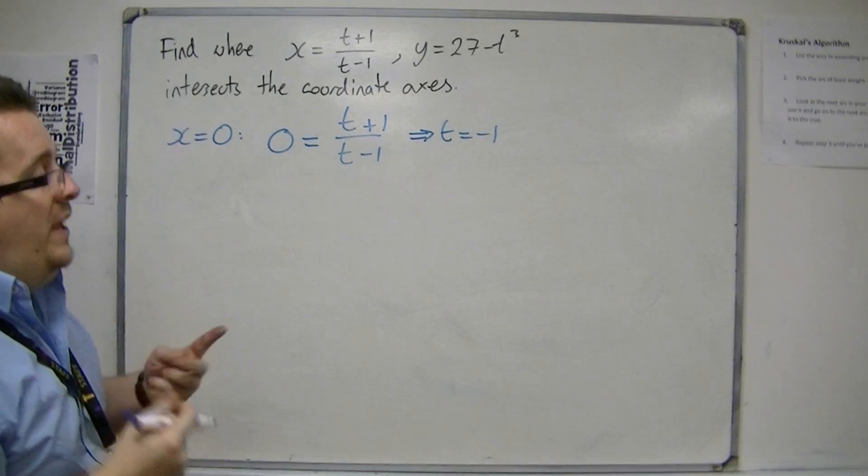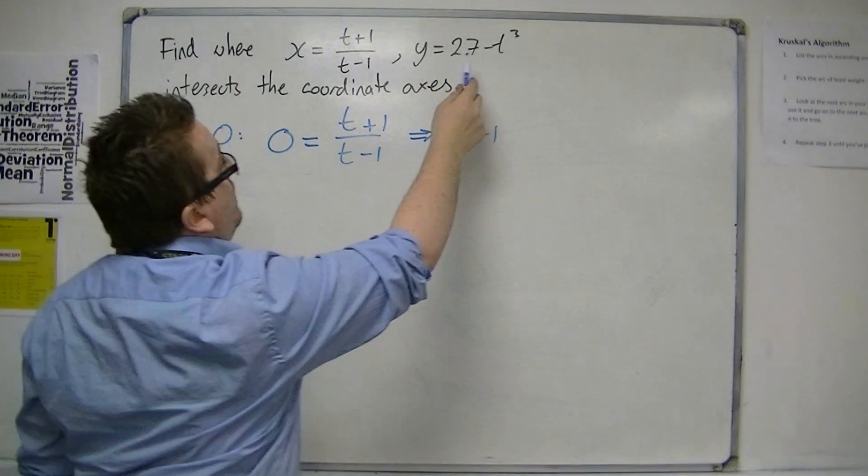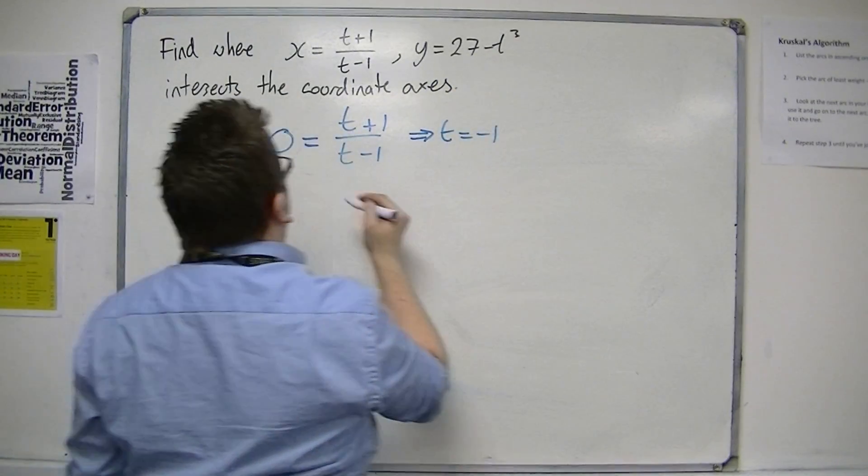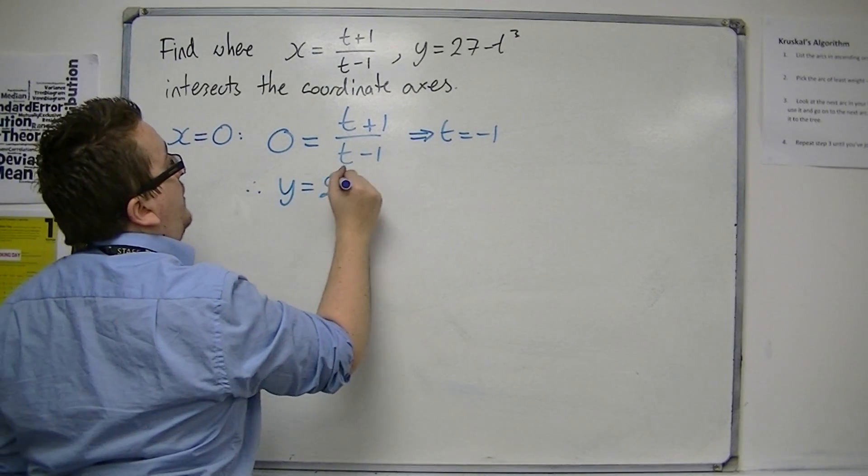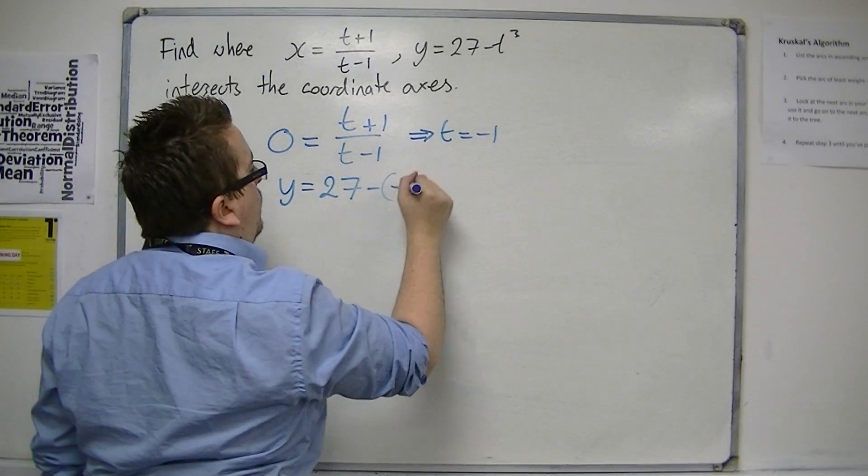So when t is minus 1, I can substitute that into the y equals. Therefore, y is equal to 27 minus minus 1 cubed.